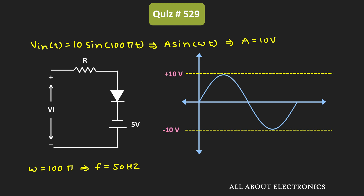Whenever the input signal goes below minus 5 volts, during that duration the diode will go into the off condition. Apart from that, for the rest of the time the diode will remain in the forward bias condition. So what we will do first is find the time during which this diode remains in the off condition, and as you can see that time is between these two points.